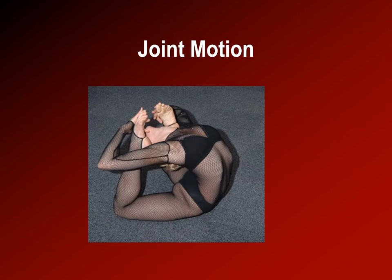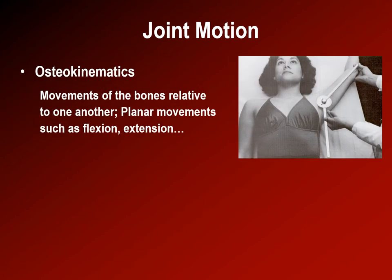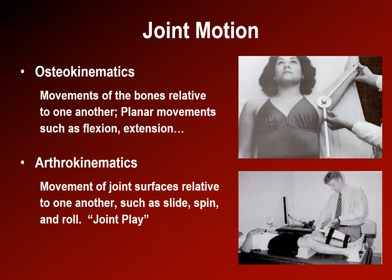Now we're going to talk about how we describe actual joint movement. Osteokinematics refers to the movement of the bone relative to the proximal segment — this is what we measure with a goniometer. Arthrokinematic motions, on the other hand, are the movements that the joint surfaces have relative to each other, and are really important for understanding joint movement and manual physical therapy.